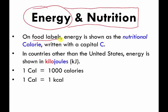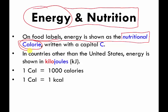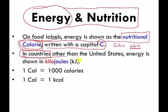On food labels, when you look at food that you buy at the store, energy is shown — at least in the United States — usually in terms of calories. It's a special kind of unit called a nutritional calorie. It's not the same as the calorie we've been talking about, but it's related. The nutritional calorie should be written with a capital C, instead of a lowercase c like we have been writing.